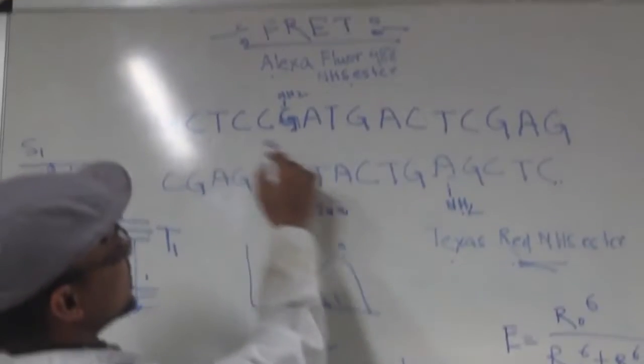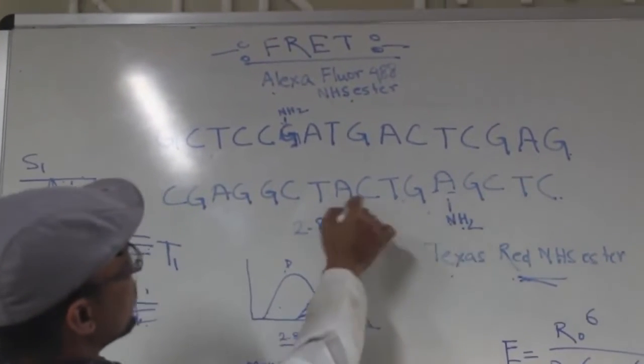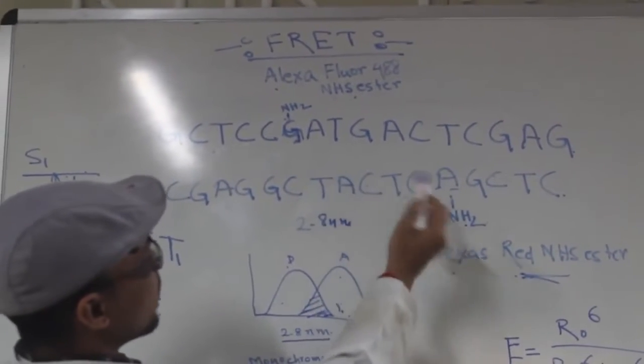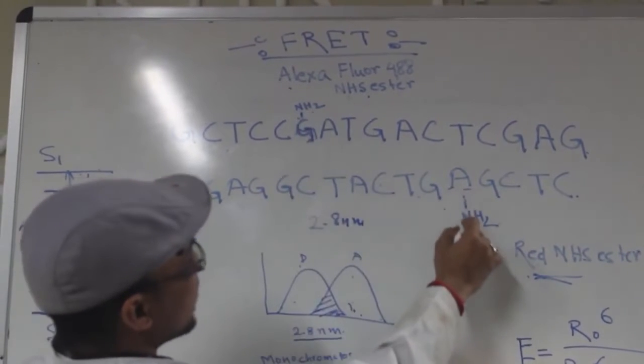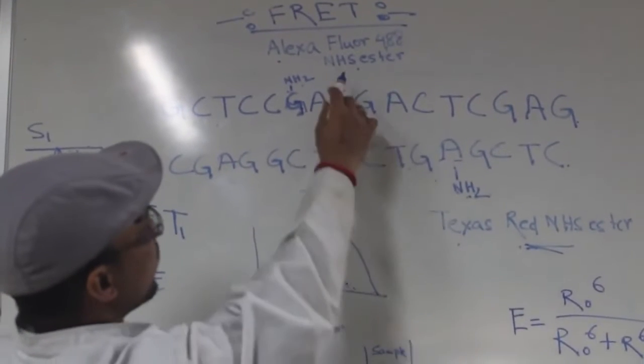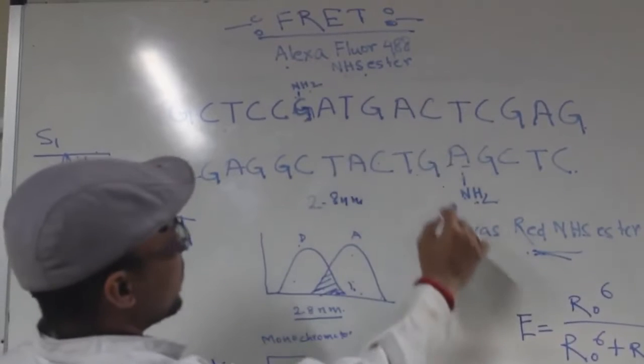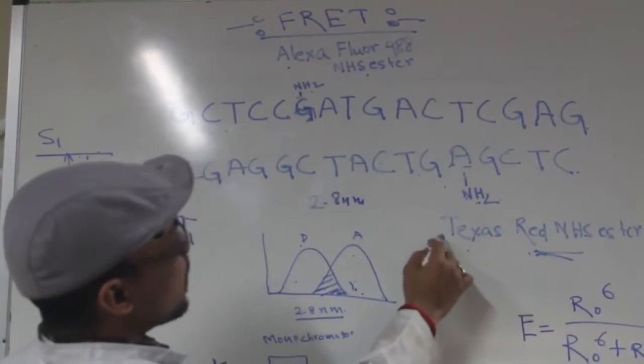For our experiment, we have a 16 base pair of DNA strands that are complementary to each other so they can undergo hybridization. G is being aminated and A is being aminated to attach to NHS ester dye Alexa Fluor 488 and Texas Red, which are FRET pair.